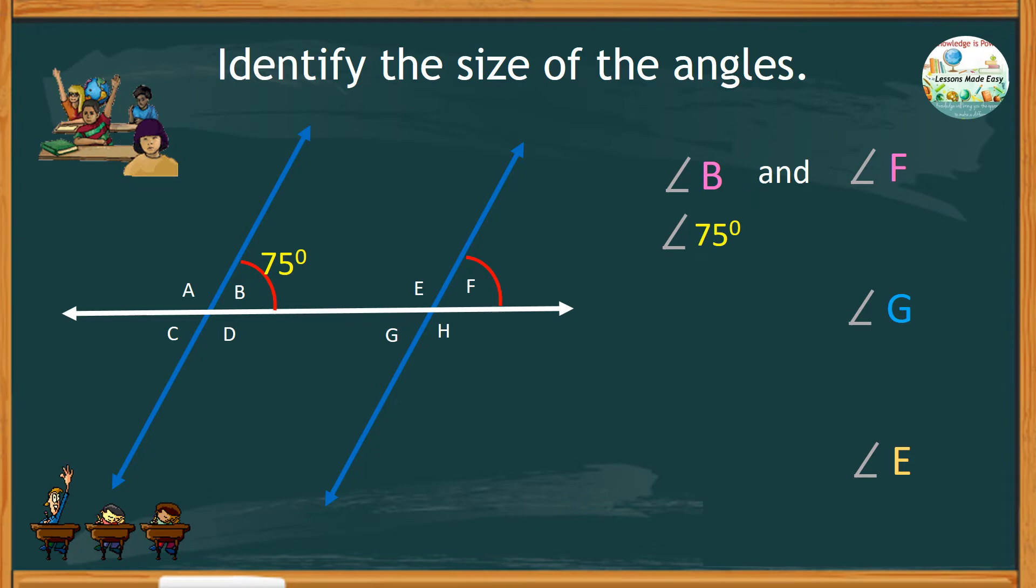So if angle B is 75 degrees, then angle F is also 75 degrees.